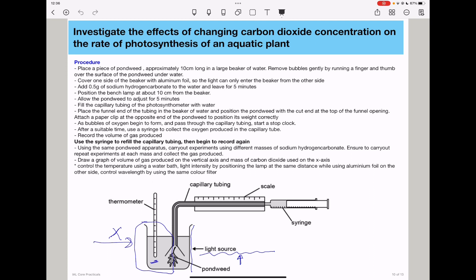Position the bench lamp at about 10 centimeters from the beaker. Allow the pondweed to adjust for 5 minutes, then fill the capillary tubing of the photosynthometer with water. Place the funnel end of the tubing in the beaker and position the pondweed with the cut end at the top of the funnel. Attach a paper clip at the opposite end to position its weight correctly.